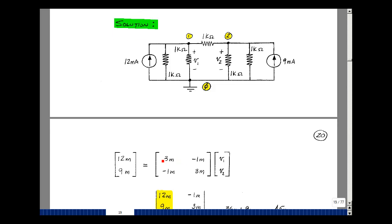In row 1, column 1, I put the sum of the conductances at node 1. 1 over 1K is 1 milli, plus 1 milli, plus 1 milli, so 3 milli-mhos. Between nodes 1 and 2, I have a 1K resistance, so it's minus 1 over 1,000, or negative 1 milli. The current source entering node 1 is just 12 milliamps.